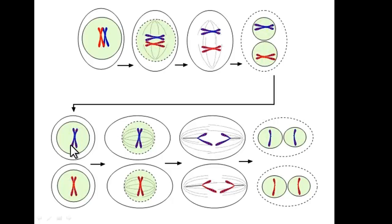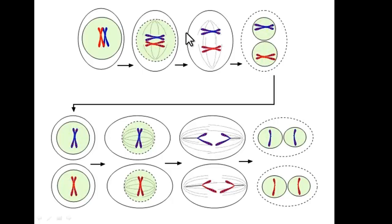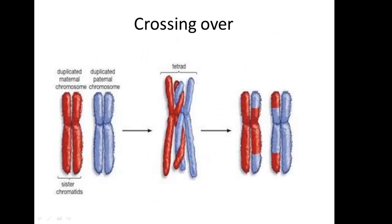During meiosis II, if crossing over were to occur, it would happen between identical chromosomes, because the two chromatids on each chromosome are exactly the same. So we probably wouldn't see any real difference or mixture of genes. So crossing over occurs in meiosis I, between the homologous pairs, at a little point called the chiasma, and it increases variation.